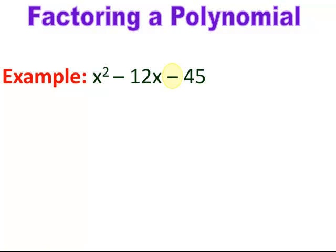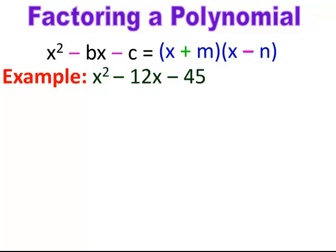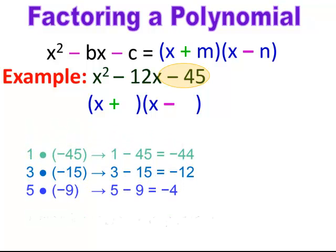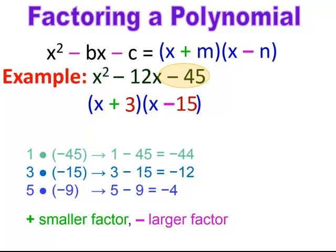For x² − 12x − 45: c is negative, so the rule is (x + )(x − ). Find factors of 45 that subtract to 12. The pair 3 and 15 works. Since b is negative, the largest factor (15) goes with the minus. So x² − 12x − 45 factors to (x + 3)(x − 15). You could also write (x − 15)(x + 3), but make sure the factors are with the right signs.